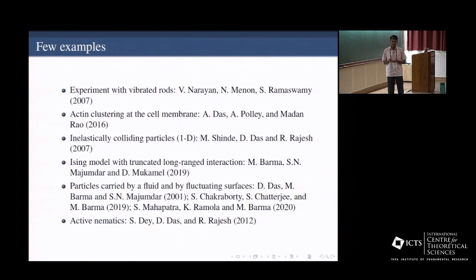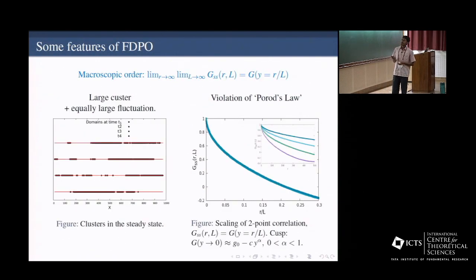But before that, how does an FDPO look like? FDPO is fluctuation dominated order. So first of all, you have order in the system. By order, some picture emerges in our mind that, okay, so you have a large system, say spins, and a large chunk of these spins are all up or majority up or something like that. Or there are traffic models or particle models where you have a large number of particles assembled at the same time. Large means macroscopically large, they occupy macroscopic fraction of the system.